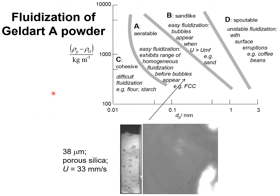FCC catalyst is what is called a Geldart A type powder. In the Geldart classification, the particle diameter is on the x-axis and the particle density (rho_p minus rho_g) is plotted on the y-axis. FCC catalyst, typically about 50 micrometers in size, is aeratable and easily fluidizable, and there is a regime of homogeneous fluidization before bubbles appear.